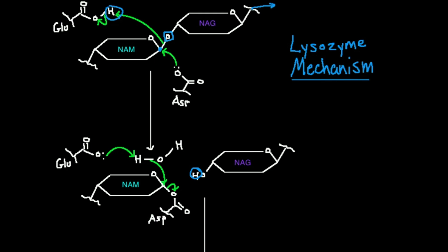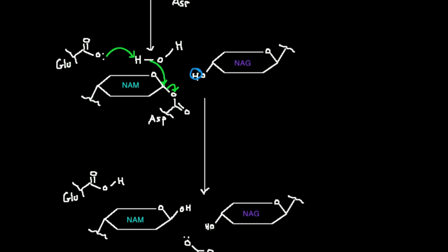Alright, so for the next step, glutamate is deprotonated. Aspartate is now attached covalently to the NAM, and basically everything else that's down here. A water is allowed into the active site. This enzyme is actually a hydrolase. Glutamate is going to deprotonate this water, taking this proton right here.